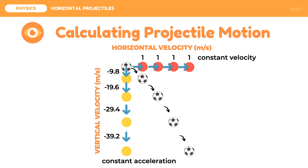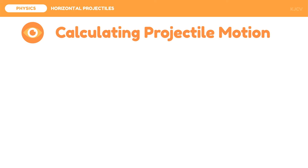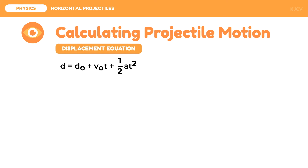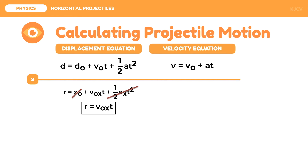We can now discuss how to calculate projectile motion using two kinematic equations: the displacement equation and the velocity equation. For the x component displacement equation: r = x₀ + v₀ₓ·t + ½·aₓ·t². We use r to denote range. Since x₀ equals zero, we cancel it. Since horizontal velocity is constant, acceleration is zero, so the last term becomes zero. Therefore, for the range: r = v₀ₓ · t.